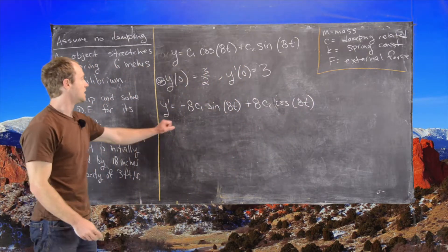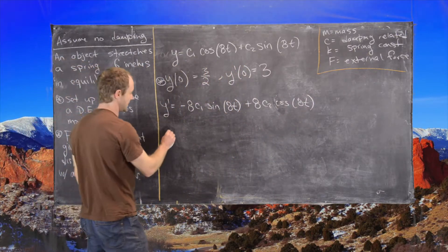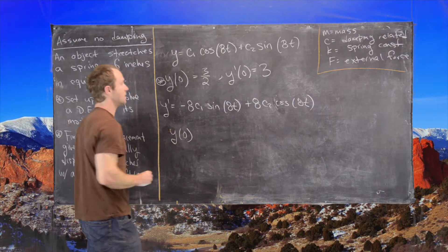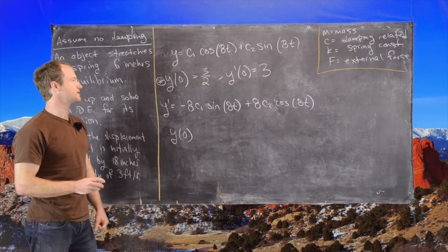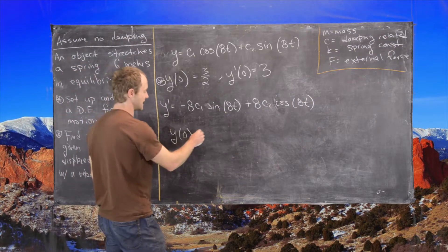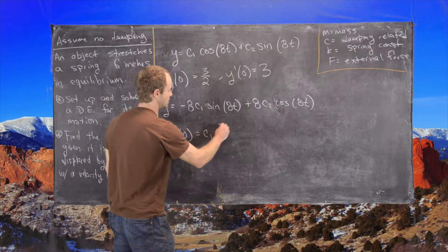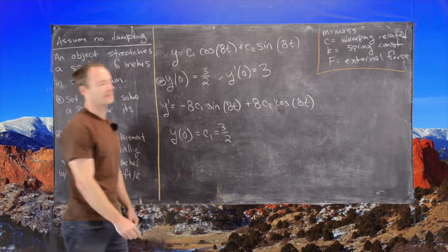Good. And now let's find y of 0. So we'll use the fact that sine of 0 is 0 and cosine of 0 is 1. So that gives us c1, which is 3 over 2. Great.